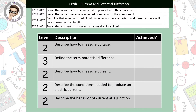So what do we need to cover today? The four statements at the top are what the government expects you to understand, and the five at the bottom are what I expect you to understand by the end of this. We need to know what a voltmeter is and how to use it, define potential difference, describe how to measure current, describe the conditions needed to produce an electrical current, and describe the behavior of current at a junction.